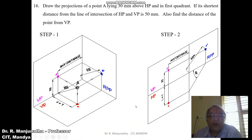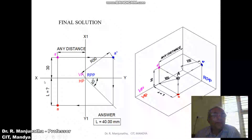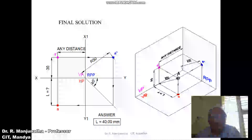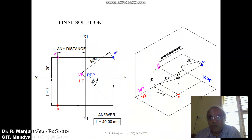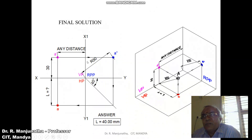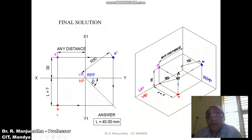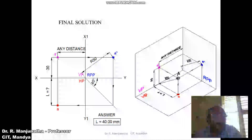Now we will try to solve the problem in the sketchbook. First, draw the XY line and X1Y1 line with thin lines and mark XY and X1Y1. Mark VP, HP, and RPP as shown. Since we don't know the distance with respect to the profile plane, any distance can be considered. From the X1Y1 line in the vertical plane, measure some distance and draw a horizontal projector. The distance above HP can be seen in the vertical plane, so from here measure a distance of 30 mm and mark this point as A dash.